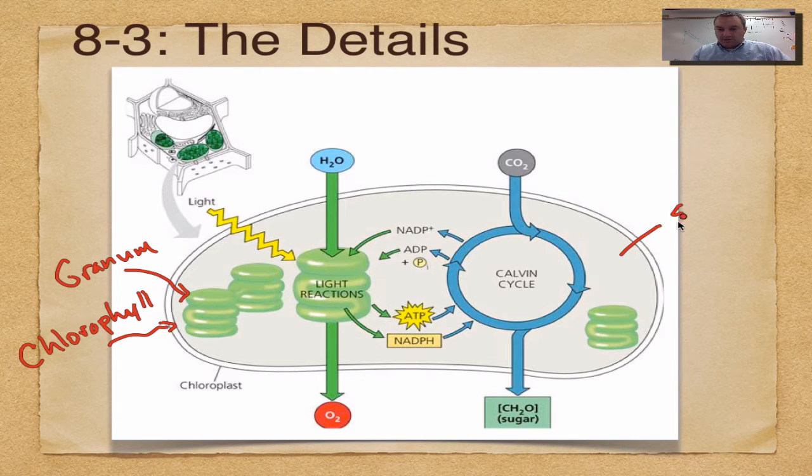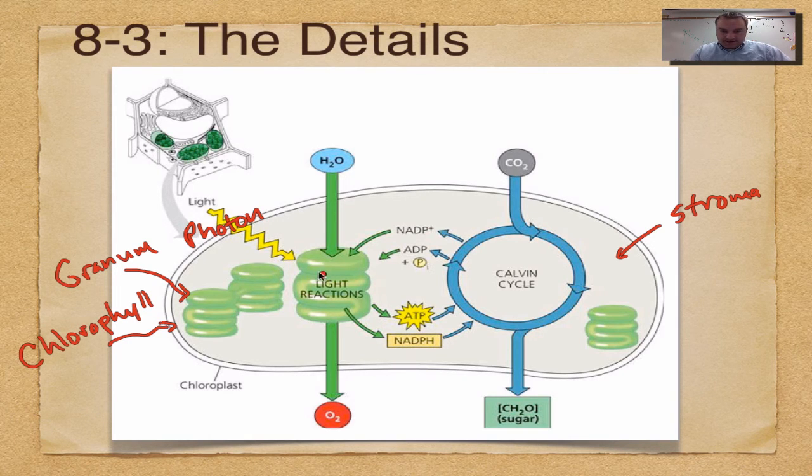We have the light reactions here, and we have the Calvin cycle out here in the stroma. Energy from light comes in little packets called photons. A photon hits the chlorophyll, which pops off an electron, and this electron is picked up by NADPH—an electron carrier. Some of the energy from light is used to make ATP. These two molecules move to the Calvin cycle and supply the energy to make it run. When you split water, that's photolysis, which is happening in this arrow.